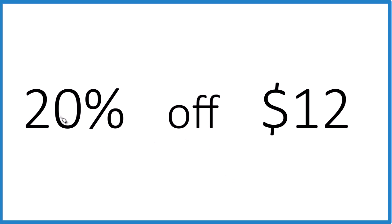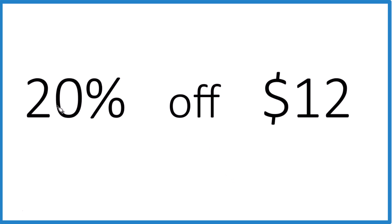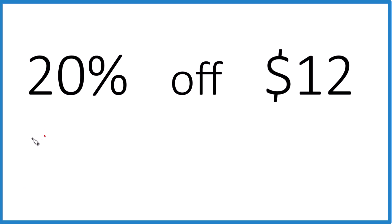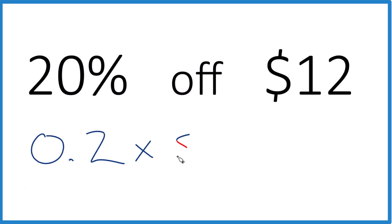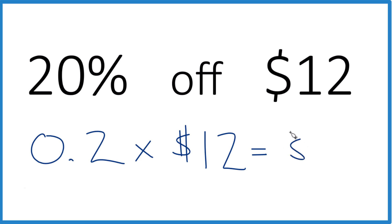So the math way: 20% — that's 20 over 100, which is 0.2. We just multiply that times our $12, and 0.2 times 12 equals $2.40.